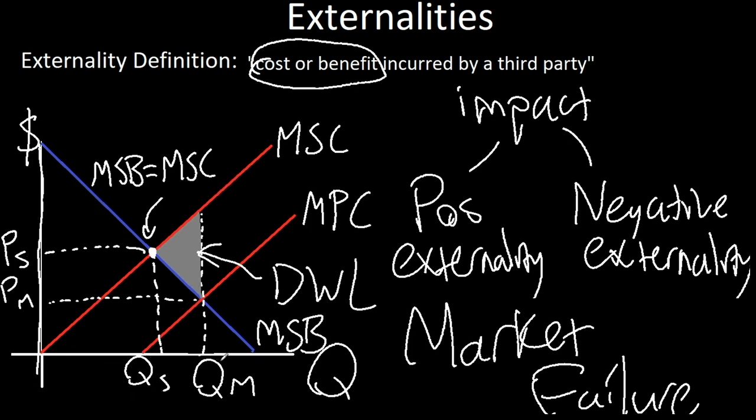But currently, the market quantity is left to the socially optimal quantity. And we want to go towards the socially optimal quantity, as we currently have deadweight loss. And us economists dislike deadweight loss. So we need a way to fix this.